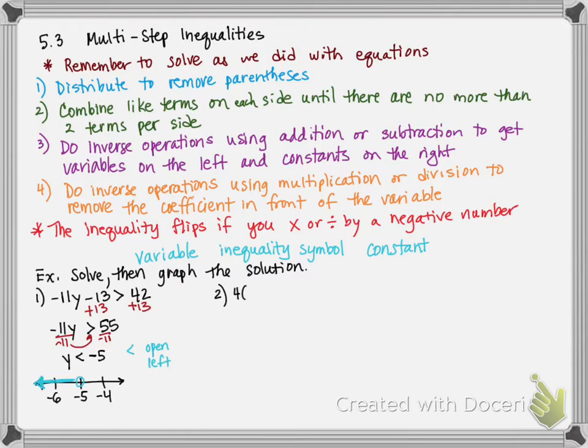Next one. We have four times the quantity three T minus five, plus seven is greater than or equal to eight T plus three. So, we need to go ahead and distribute to remove parentheses. Four times three, twelve T. And then we've got four times negative five is going to be a negative twenty, and then nothing else happens. We just write out the rest of everything. The right side has two terms, and you can't combine them. The left side, though, I do have two terms that can combine. So, I'm going to keep the twelve T, but negative twenty plus seven is negative thirteen.